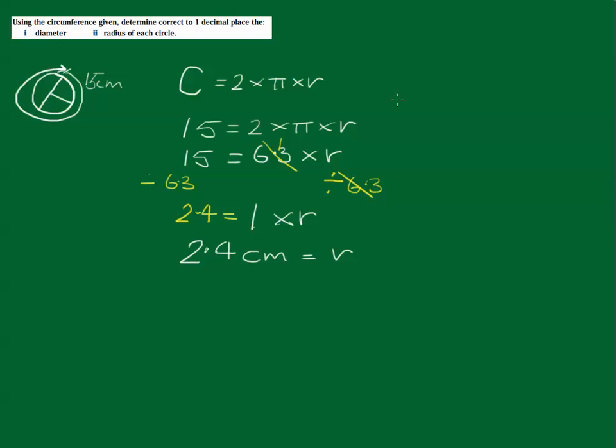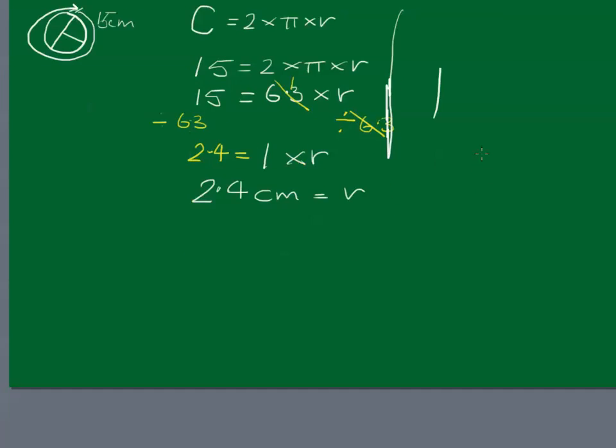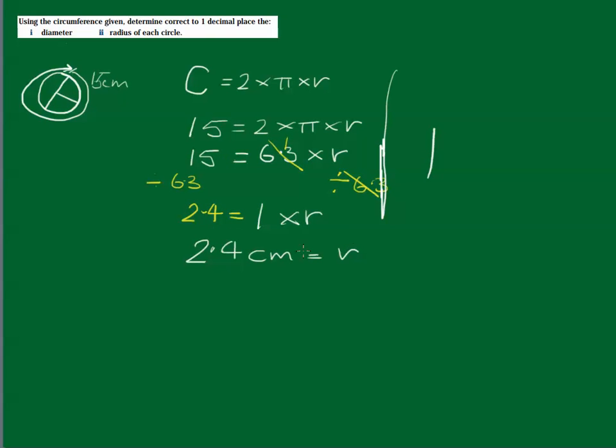But what about the diameter? Well, the diameter, we all know, the diameter is equal to 2 times the radius. So what we're going to do is fix that screen up a bit. And we're just going to say, well, d equals 2 times r. Therefore, d is equal to 2 times 2.4, and that's going to be equal to 4.8cm. And that's our answer.